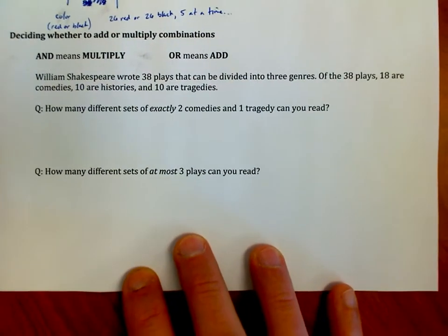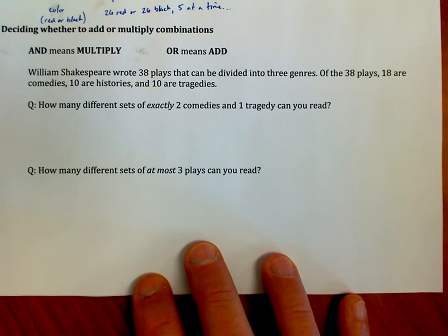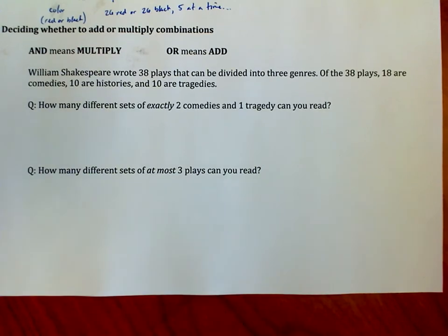So let's look at a different example here, and hopefully this will help shore up our ideas a little bit. William Shakespeare wrote 38 plays, and they can be divided into three genres. So out of those 38 plays, 18 of them are considered comedies, 10 are considered histories, 10 are considered tragedies. So how many different sets of exactly two comedies and one tragedy can you read?